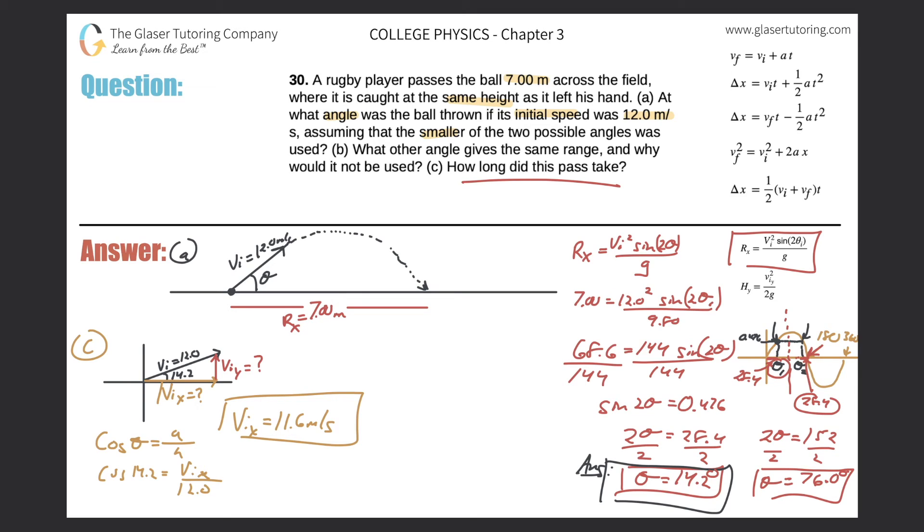Now, there's no acceleration in the x direction. The only acceleration, since the ball is essentially in free fall, will be in the y direction. Knowing that there's no acceleration present, I can use my simple formula: velocity equals displacement over time. More specifically, this is really average velocity, but there is no change in velocity. The initial is the same as the final because there is no acceleration, so the initial velocity in the x direction equals the average velocity: 11.6. The displacement in the x direction was my range, 7 meters, divided by time. Do a little cross multiplication: 7 divided by 11.6.